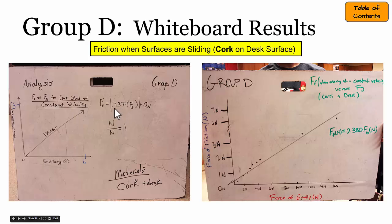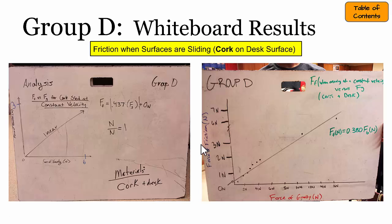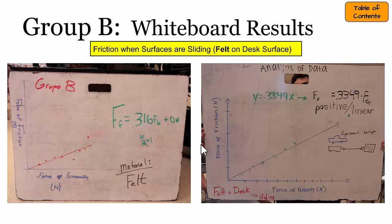But they found that when the object was sliding, the size of the frictional force was less than half of the weight — in this case 0.437 times the weight. This group found it was about 0.380 times the weight, which confirms our pre-lab observations that the frictional force between objects when they're sliding is smaller than the biggest force that can exist when two surfaces are not moving or at rest.